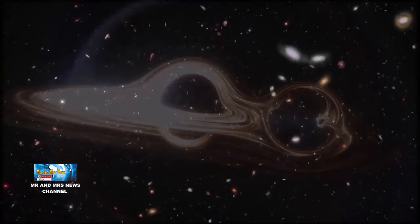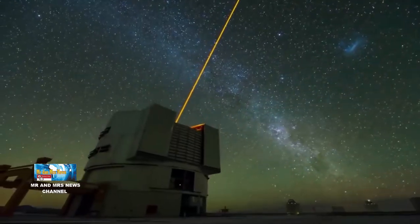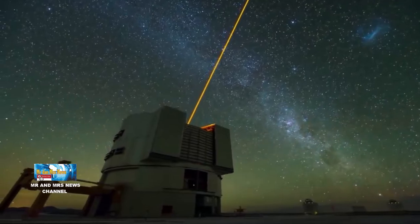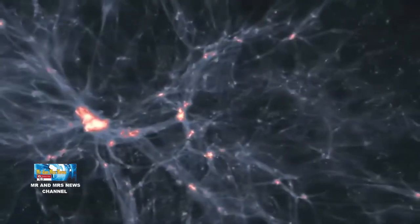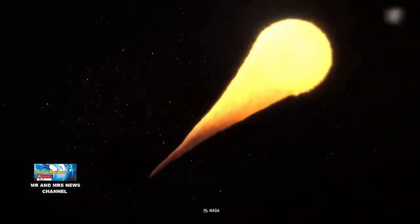Beberapa percobaan yang berbeda untuk mempelajari lubang hitam juga dilakukan. Event Horizon Telescope misalnya mampu melihat lubang hitam supermasif yang berada di inti galaksi kita dan galaksi terdekat M87.